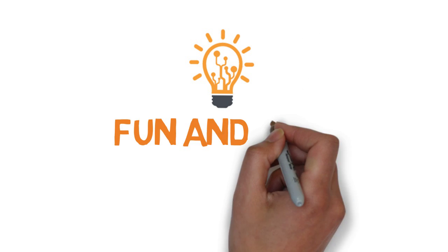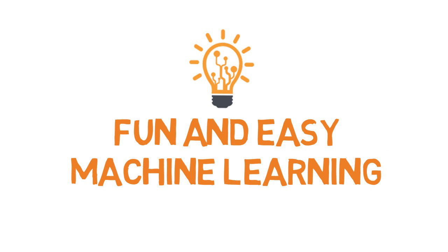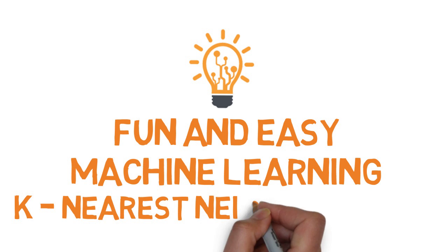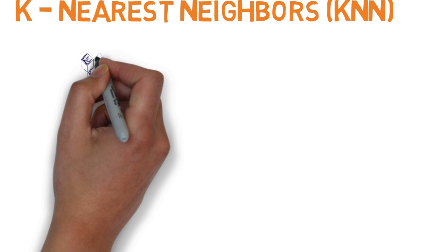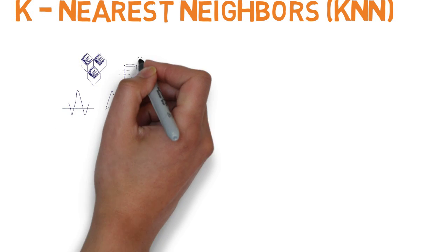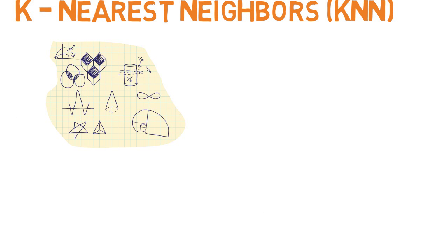Hi, and welcome to another fun and easy machine learning tutorial on K-Nearest Neighbors. In pattern recognition, the KNN algorithm is a method for classifying objects based on the closest training examples in the feature space.